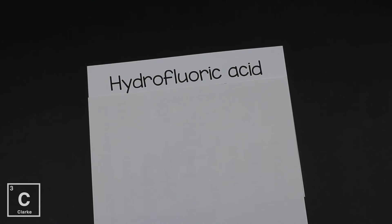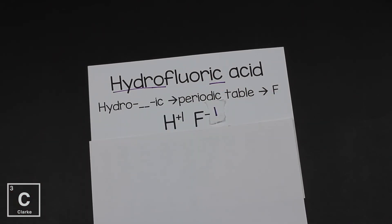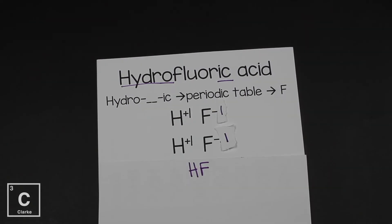Let's look at hydrofluoric acid. We notice we've got hydro and -ic. That means the second element comes from the periodic table. Since the root is fluor, that means fluorine. Hydrogen is in group one, so it has a plus one charge. Fluorine is in group 17, it has a negative one charge. One and one equals zero, and since hydrogen and fluorine are both ones, they come together in a one-to-one ratio. So we just have HF, or hydrofluoric acid.